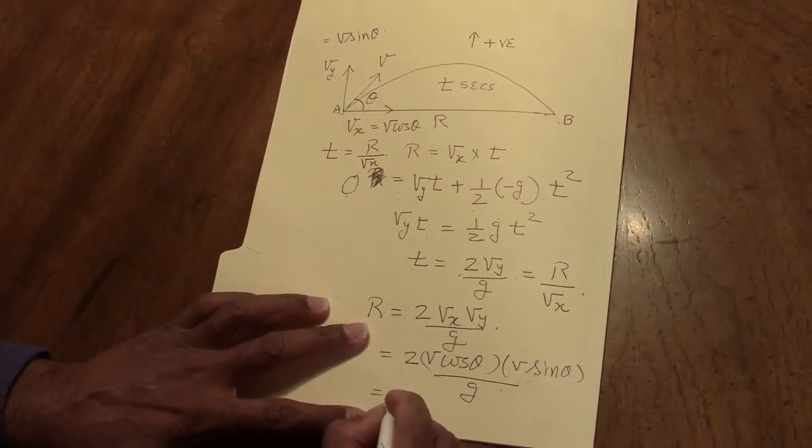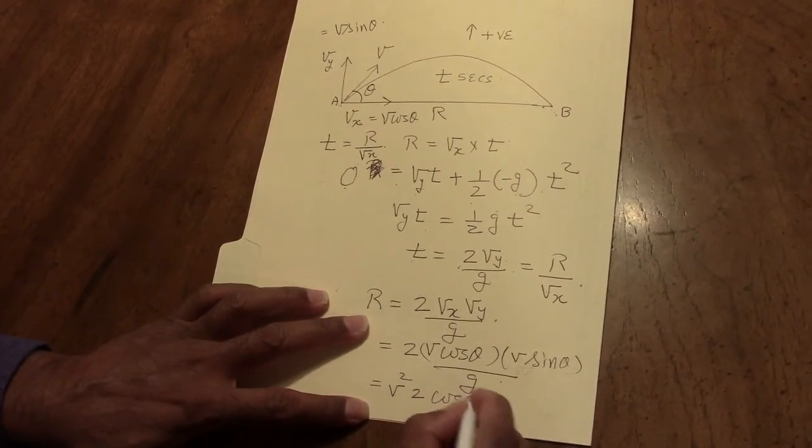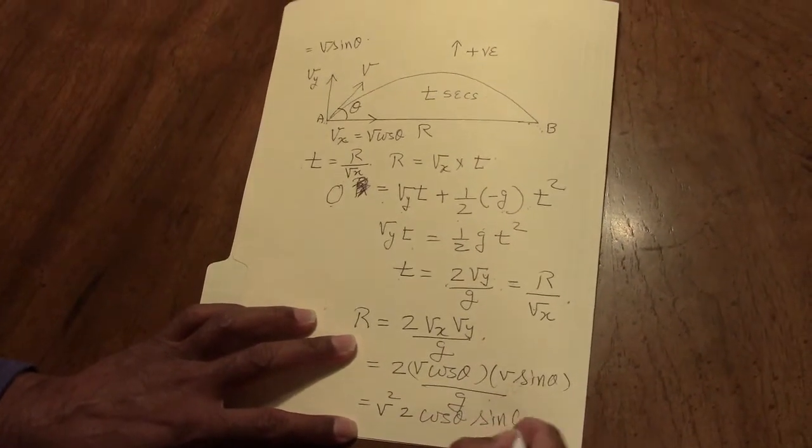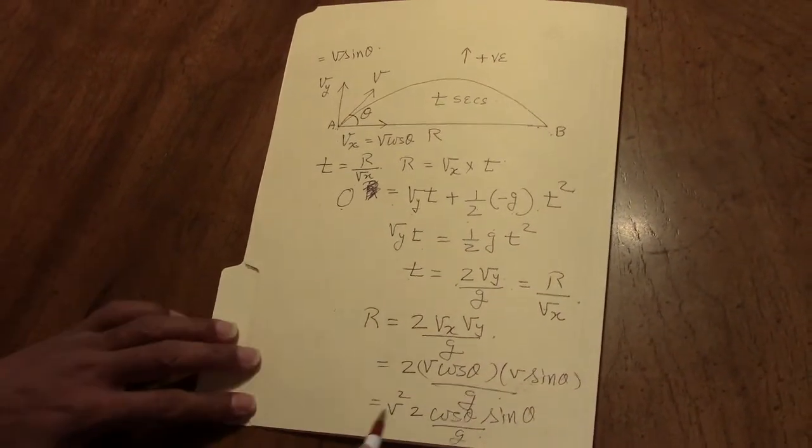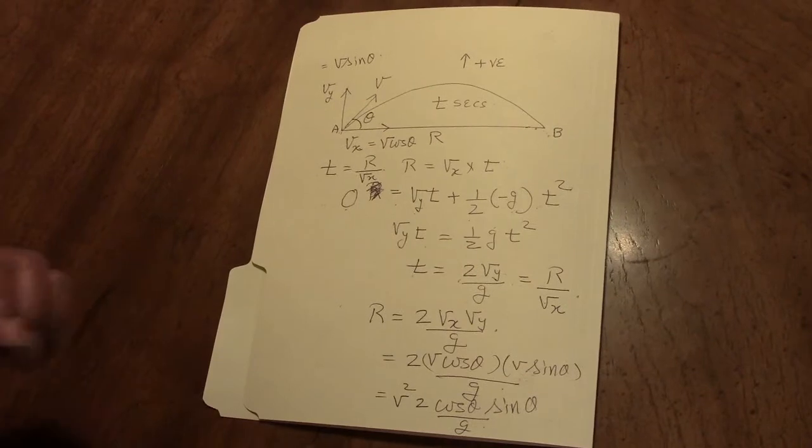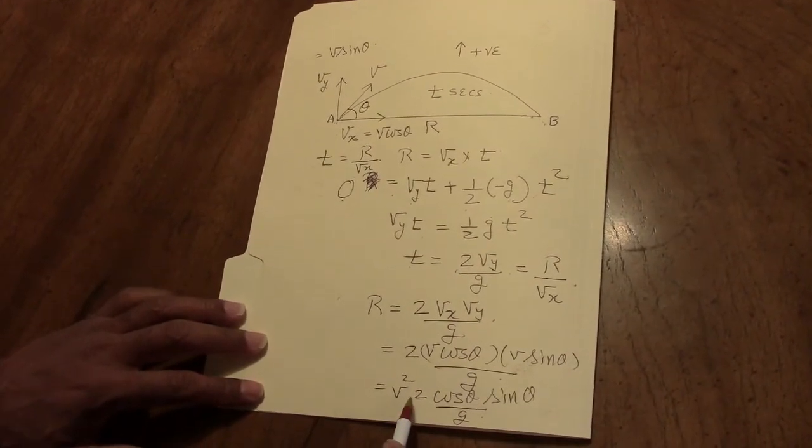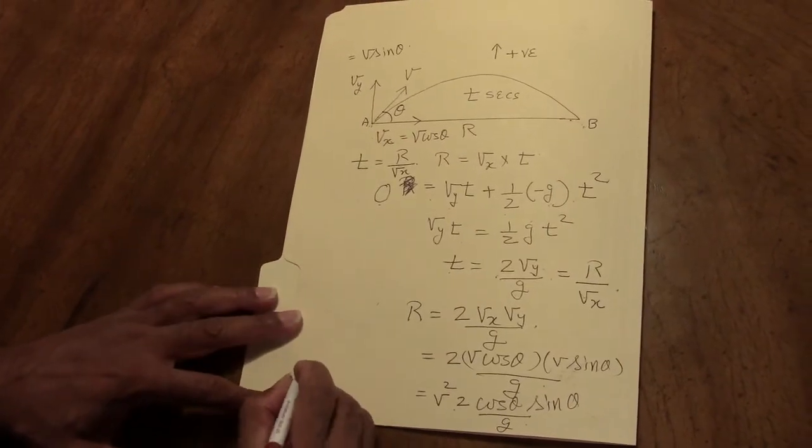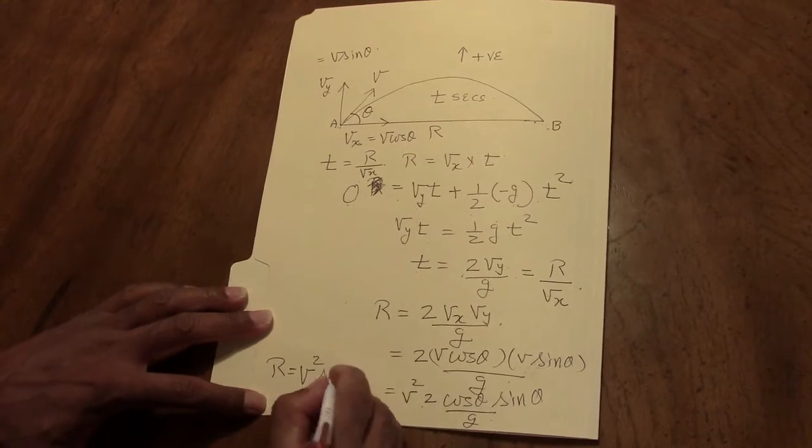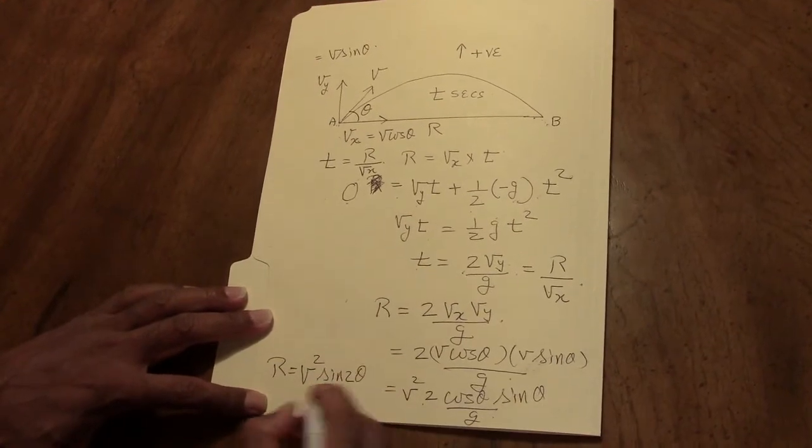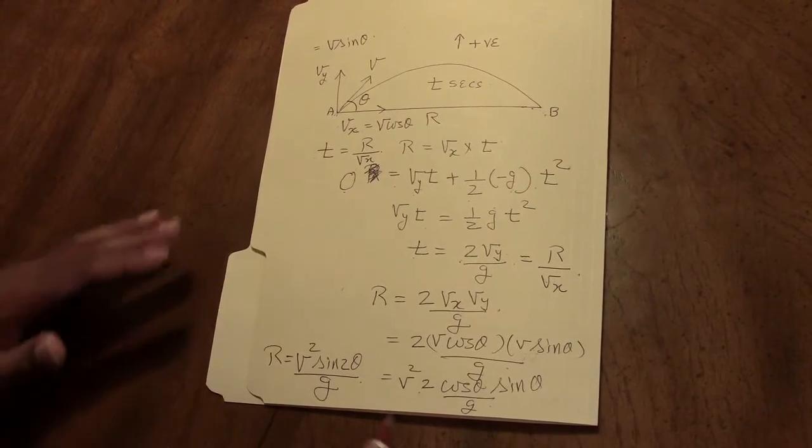In other words, this is V squared, 2 cos theta sine theta over g. Those of you who have studied trigonometry know the identity 2 sin theta cos theta equals sin 2 theta. So the range is V squared sin 2 theta over g, where g is the acceleration due to gravity.